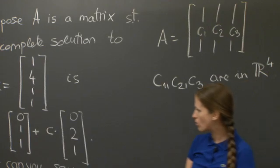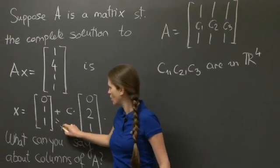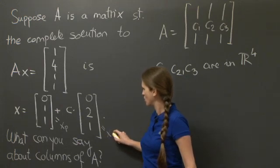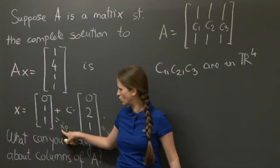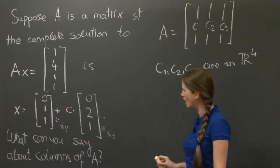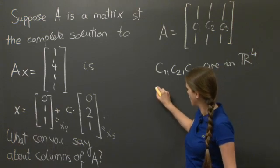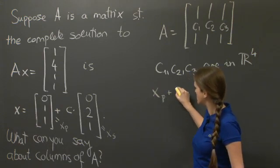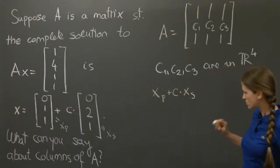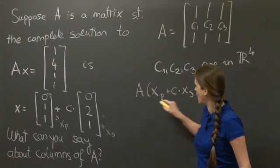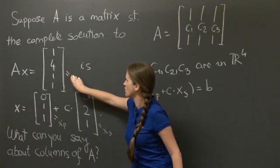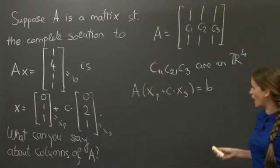Now, if you learned about particular solutions and special solutions, then my notation here shouldn't surprise you. I'm going to call this vector here xp and this vector here xs. And I'm going to use the fact that xp plus C times xs satisfies A times this equals B.